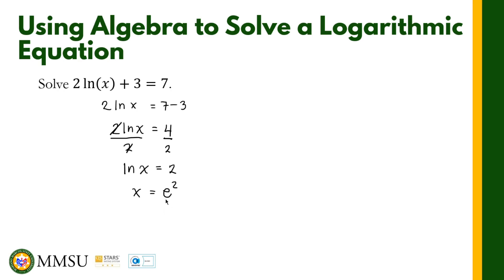Here E is the base of the logarithm, 2 is the exponent C, and x is S. We have converted the logarithmic equation into its exponential form. So we have solved for x: x equals E squared.